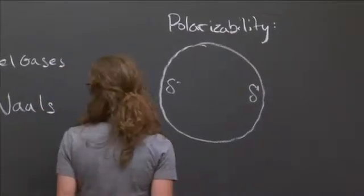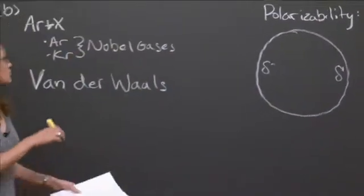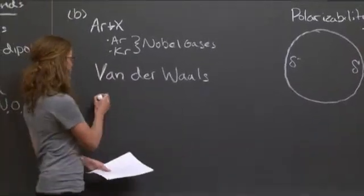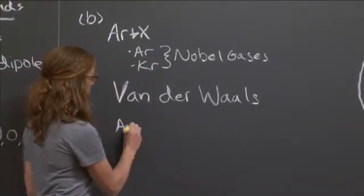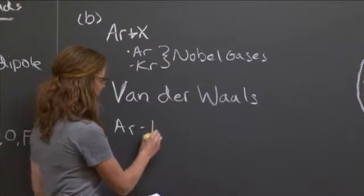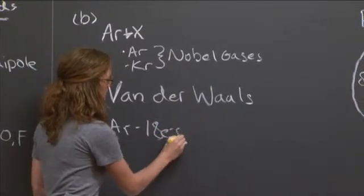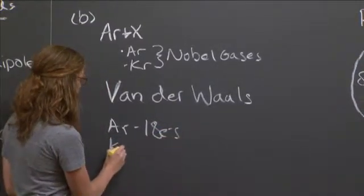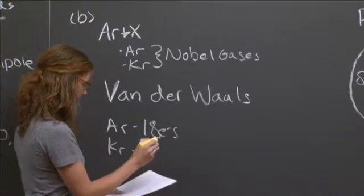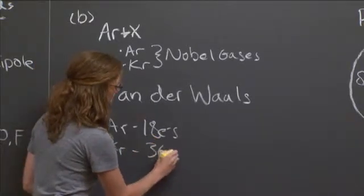This can be due to just spontaneous fluctuations in the electron density or to an external charge or another molecule or something. But here we have two nonpolar atoms. So we want to see which one will inherently be easier to polarize. And so if we go back to our two species here, we have argon, which has 18 electrons, and krypton, which has 36 electrons.